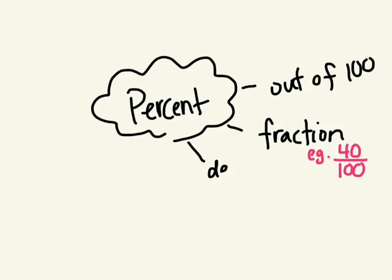You can also write it as a decimal. Does anyone know what 40 out of 100 would be written as a decimal? Yep. Good. Zero decimal four zero. Excellent.